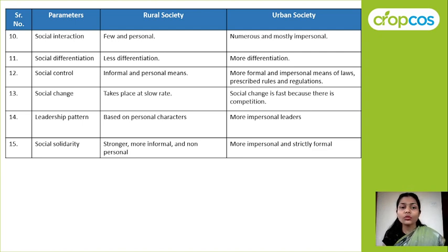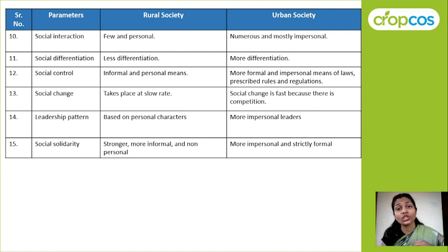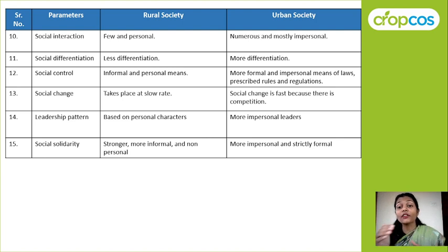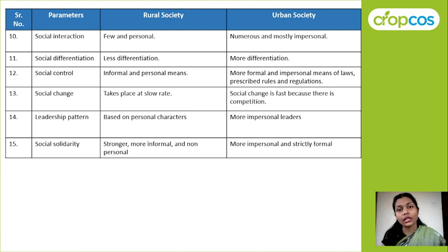Regarding social change: in rural society, social change takes place at a slow rate. In urban society, social change is fast because there is more competition. About leadership pattern: it is based on the personal traits or characteristics of rural people, while in urban society leaders are more impersonal and selected through a specific formal procedure. For social solidarity — the bond of unity — it is strong, more informal and personal in rural society, whereas in urban society solidarity is more impersonal and strictly formal.